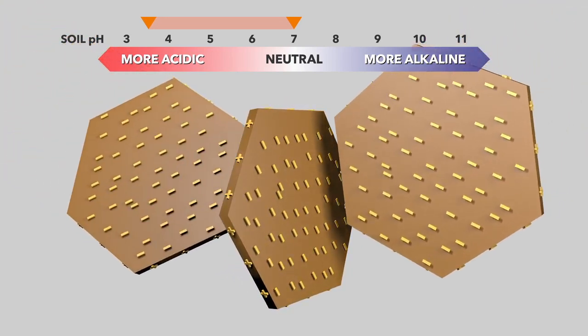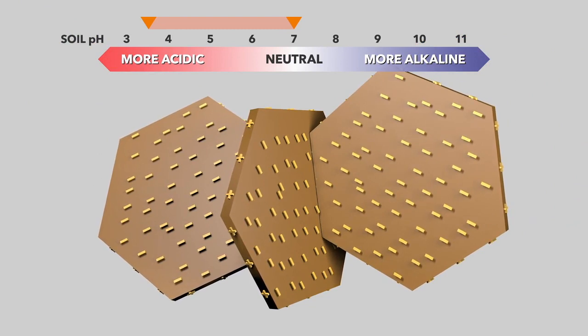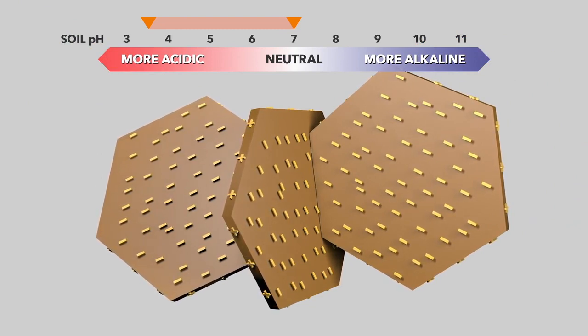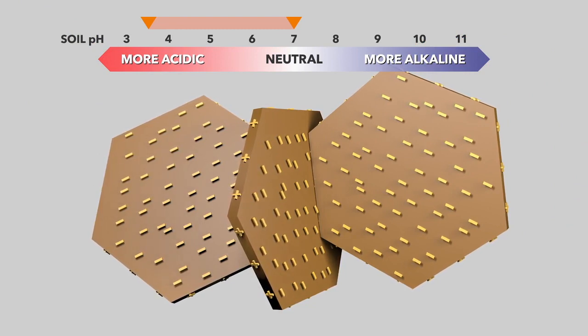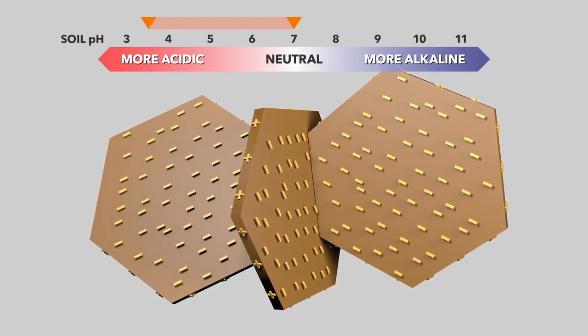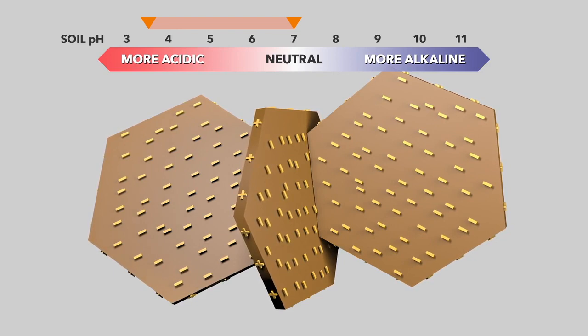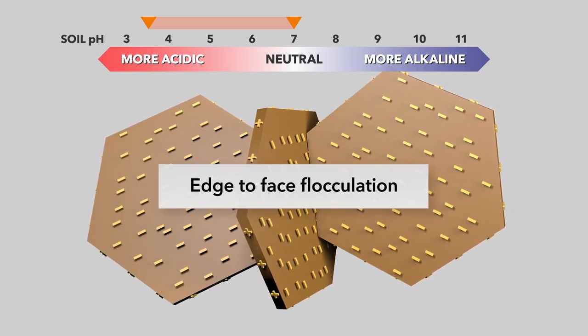Under these conditions, the clay plates can become arranged into large structures in which the edges of clays are electrostatically bound to clay faces. This is called edge-to-face flocculation.